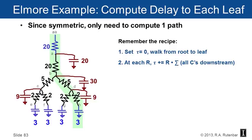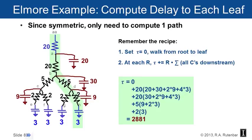Remember the recipe. You set tau as zero. You walk down the root to the leaf. At every node, you multiply the resistor you're on by all the capacitors in front of you. Walking down the right hand path to node H: the resistor of size 20 between AA and A multiplied by 20 plus 30 plus 2 nines plus 4 threes. Going further, the resistor from A to B is 20 times the capacitor 30 plus 2 nines plus 4 threes. Resistor of size 5 between B and D, one 9 plus 2 threes. Resistor of size 2 from D to H multiplied by a single capacitor 3. Add that all up, 2881 in appropriate units.